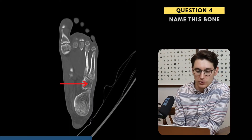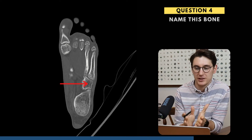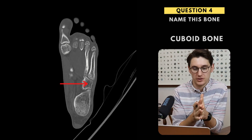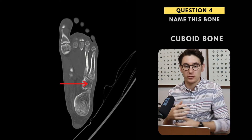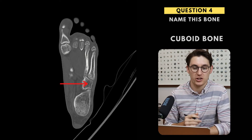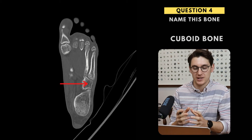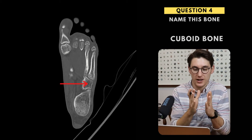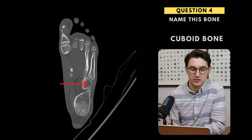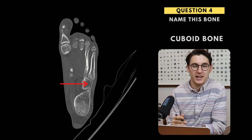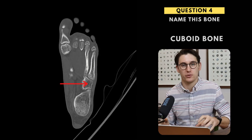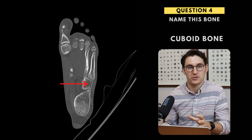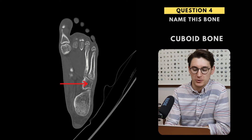Question four — relatively simple, labeling this bone. What we have here is the cuboid bone. Just like the carpals, people often get muddled up with the tarsals. The most lateral bone that articulates with the fourth and fifth metatarsal is the cuboid bone, and it lies laterally to our cuneiform. People often label this the lateral cuneiform, but in fact it's the cuboid bone.